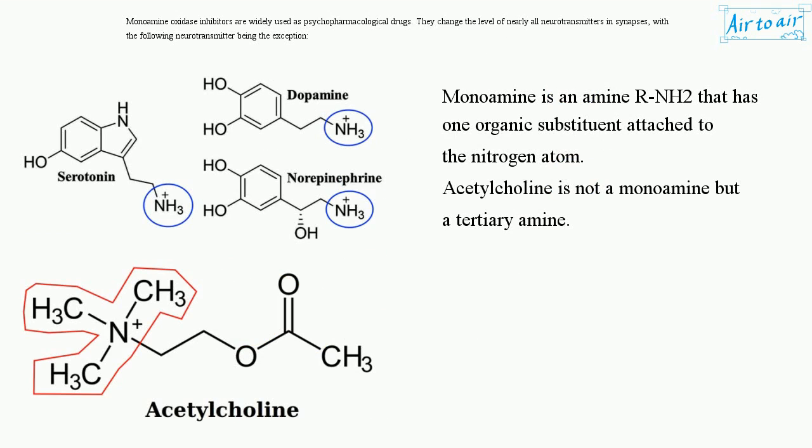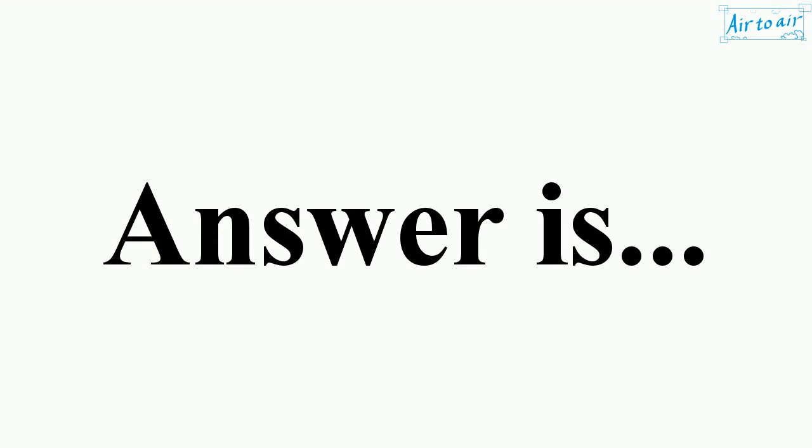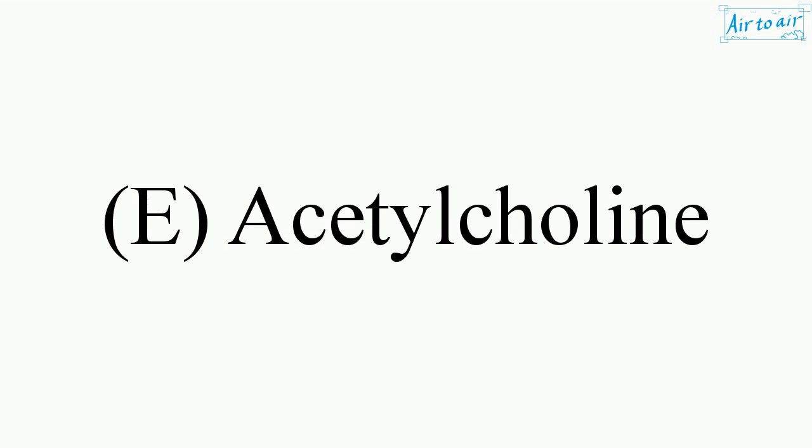A monoamine is an amine (RNH2) that has one organic substituent attached to the nitrogen atom. Acetylcholine is not a monoamine but a tertiary amine. Therefore, the answer is E: Acetylcholine.